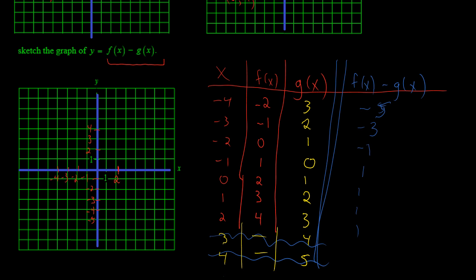So negative 4 is a negative 5. Negative 3 is a negative 3. And negative 2 is a negative 1.